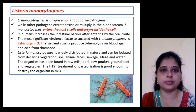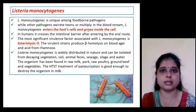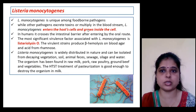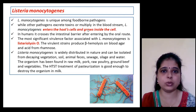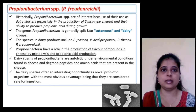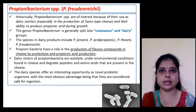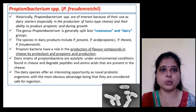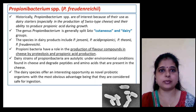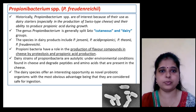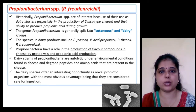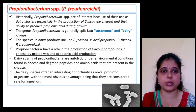Listeria enters the host cell and grows inside it. The most significant virulence factor associated with it is listeriolysin O. Propionibacterium species is used as a dairy starter for the production of Swiss-type cheese. It is generally spread into cutaneous and dairy groups, and plays a role in the production of flavor compounds in cheese by proteolysis and propionic acid production.